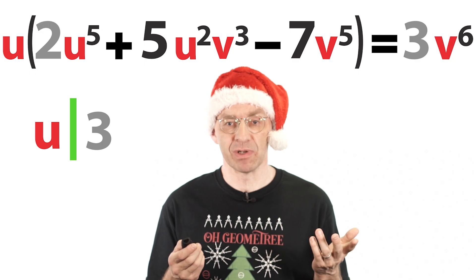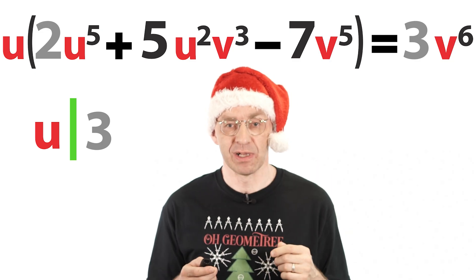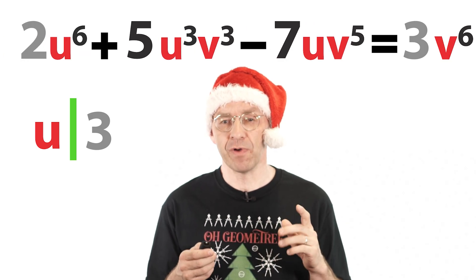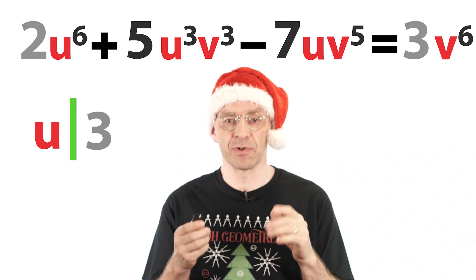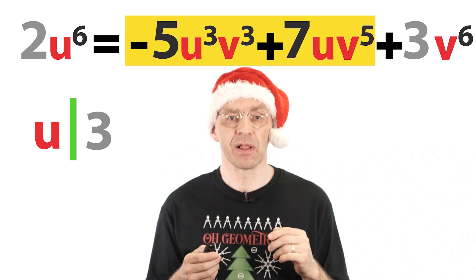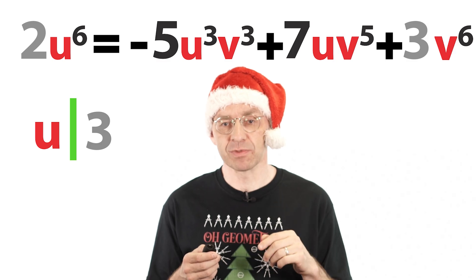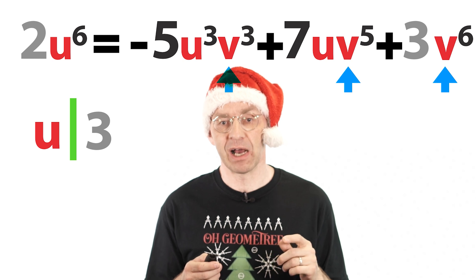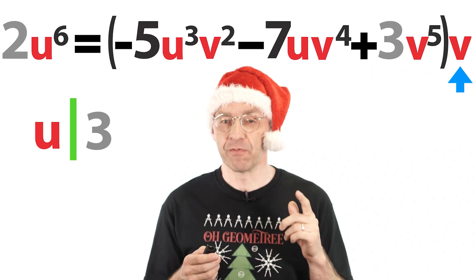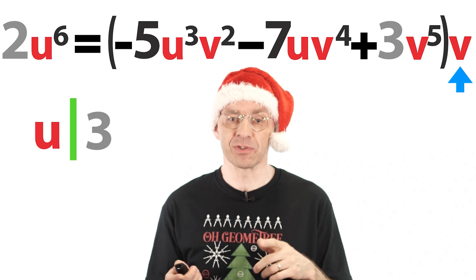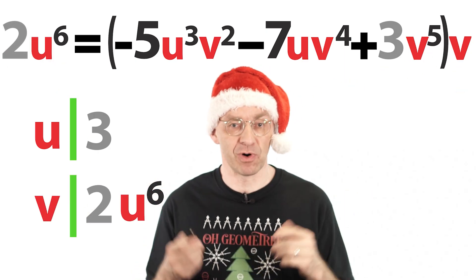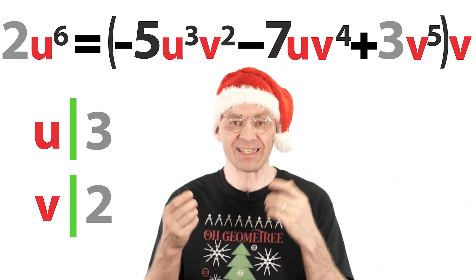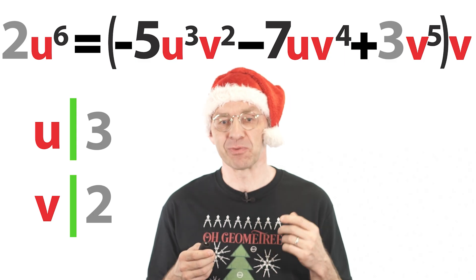And with a slight rearrangement we can pin down v in exactly the same way. Let's back up one step. We'll now move everything to the right side except for the u to the power of 6 term like that. Now all the terms on the right have the common factor v. Pull the v out in the back. Now v divides the right side and therefore also the left side. And just like before we can conclude that v divides 2. Easy peasy. What a fantastically simple proof for such a powerful theorem.